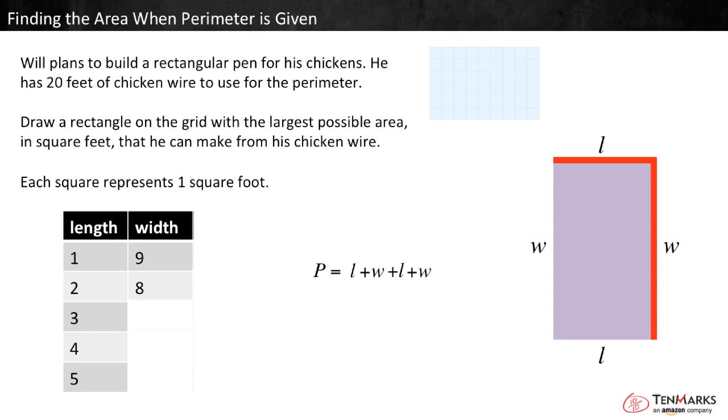For a length of 2, there's a width of 8 because 2 plus 8 equals 10. If the length is 3, the width is 7 because those numbers make 10. If the length is 4, the width is 6. And if the length is 5, the width is also 5.